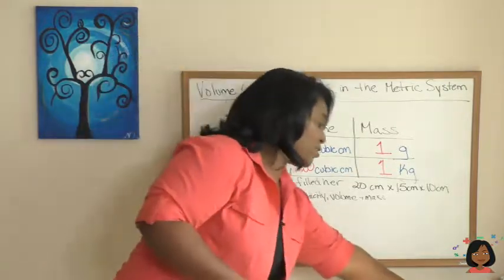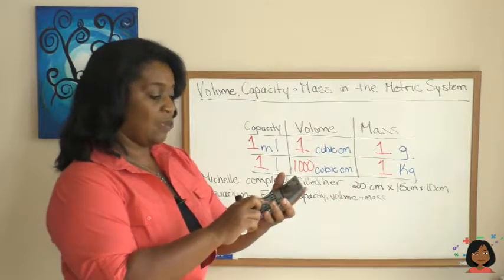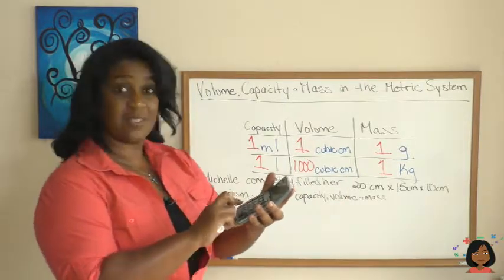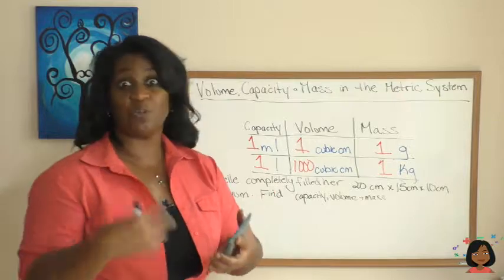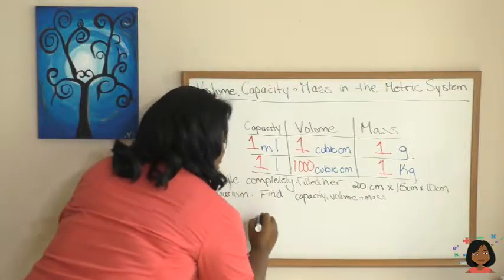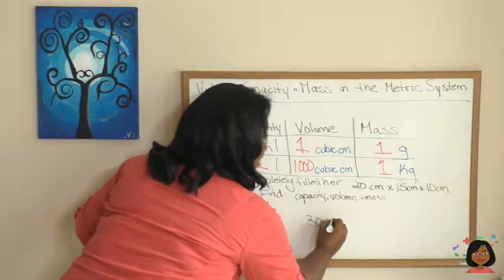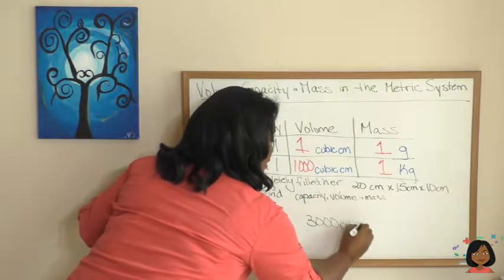So we're going to use a calculator for this one. We're going to do 20 times 15 times 10, and that works out to 3,000. So volume is going to be 3,000 cubic centimeters.